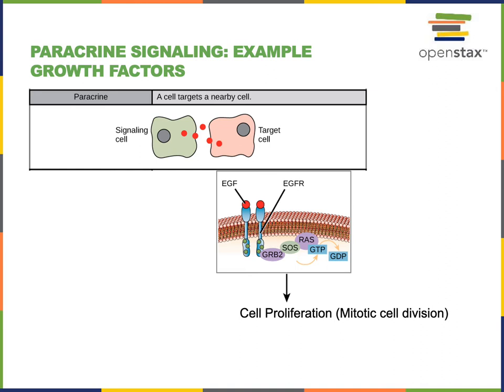Another example of a paracrine signal is a growth factor like epidermal growth factor. Epidermal growth factor is secreted by signaling cells within the epidermis and binds to receptors on nearby cells. It diffuses through the tissue to bind to receptors on nearby cells and stimulate mitotic cell division in order to stimulate growth of the epidermal tissue.